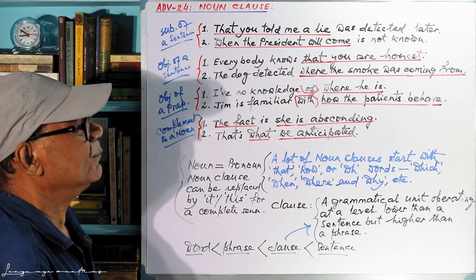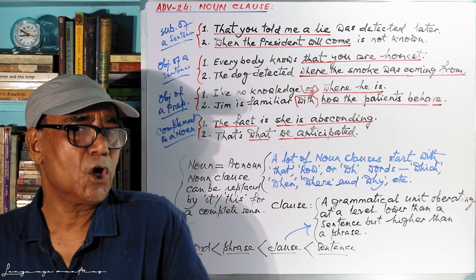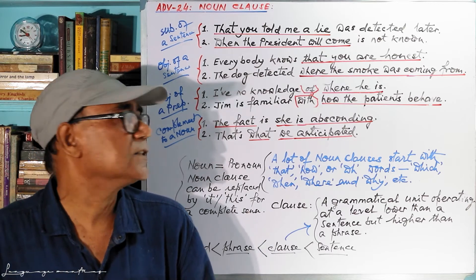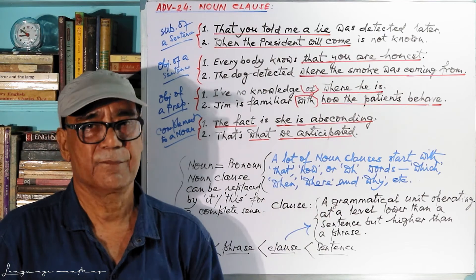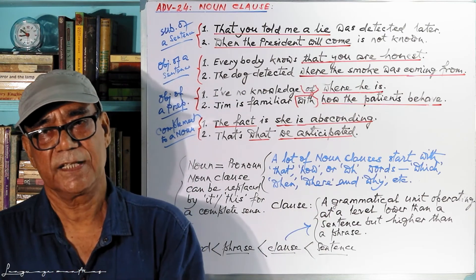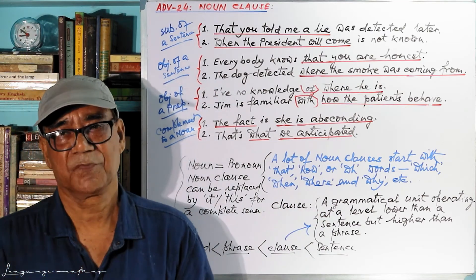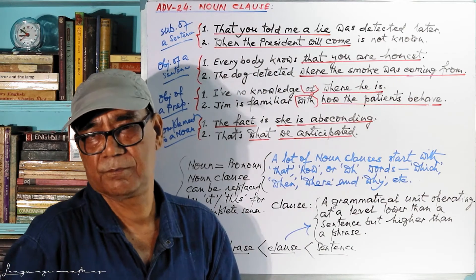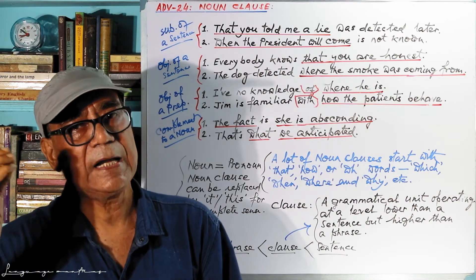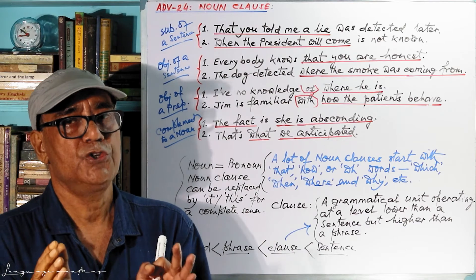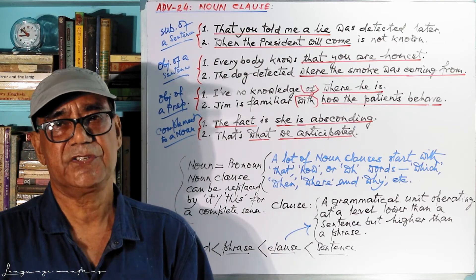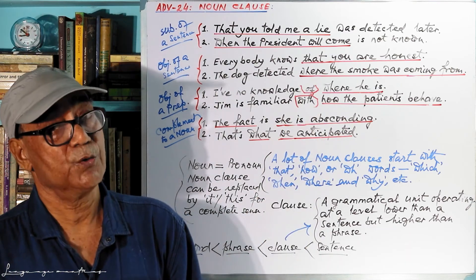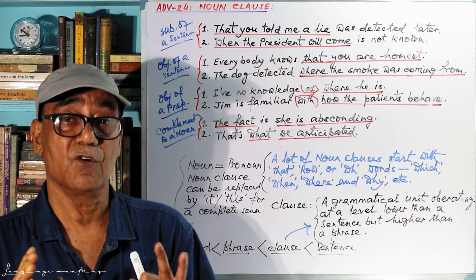"The dog detected where the smoke was coming from." What did the dog detect? The dog detected where the smoke was coming from. Make it smaller: the dog detected the place, and "place" is a noun. Therefore, "place" equals "where the smoke was coming from." If you can replace a clause with "it," "this," "that," "something," "time," "place," etc., then it becomes a noun clause. Very simple.